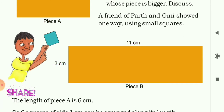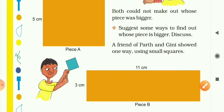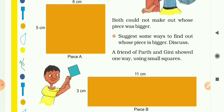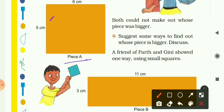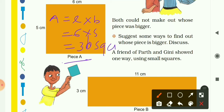There are many ways to determine which piece is bigger — Piece A or Piece B. Simply, we will find their areas. Both are rectangles, so we use the formula: area of a rectangle equals length into breadth. For Piece A, area = 6 cm × 5 cm = 30 cm². Similarly, for Piece B, area = 11 cm × 3 cm.